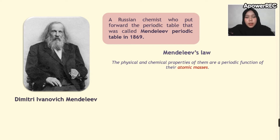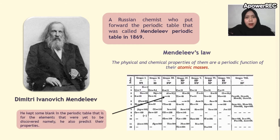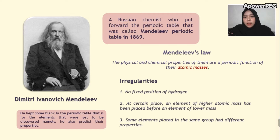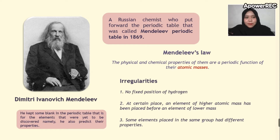Here is an example of his table. As you can see, there are some blank spaces, indicating that some elements had not yet been discovered, and he predicted their properties. Despite his achievements, there were still some irregularities: no fixed position for hydrogen; at certain places an element of higher atomic mass was placed before one of lower mass; and some elements placed in the same group had different properties.